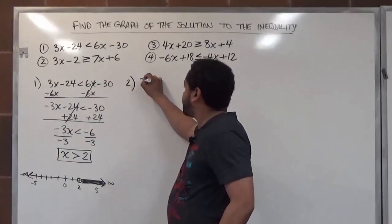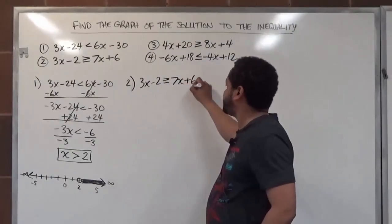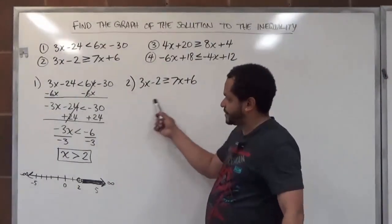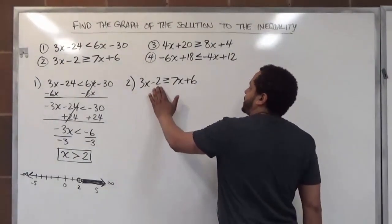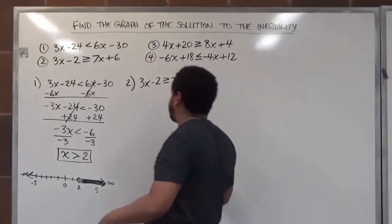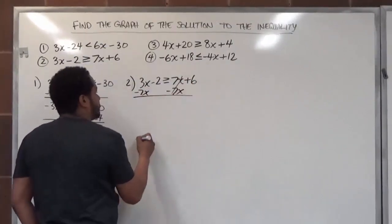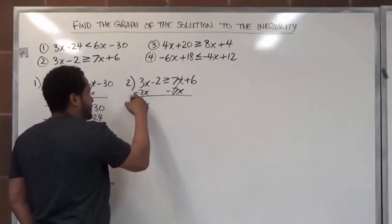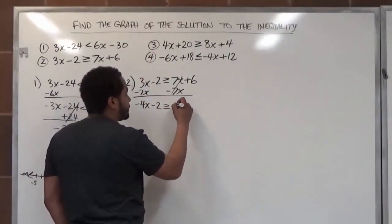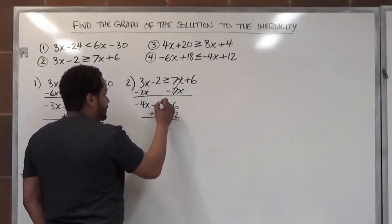Let's move on to the second equation: 3x take away 2 is greater than or equal to 7x plus 6. Again, we take three steps — first moving the x's to the left side, second moving the constants to the right side, then dividing by the coefficient of x. Let's subtract 7x from both sides. These x's go away, leaving negative 4x on the left. Seven take away three is four, keep the sign of the larger, giving negative 4x take away 2, greater than or equal to positive 6. Next, add 2 to both sides: negative 4x is greater than or equal to 8.